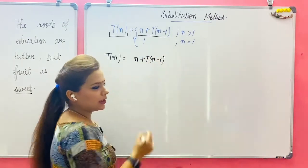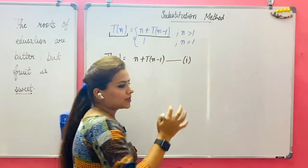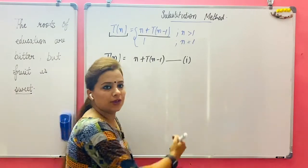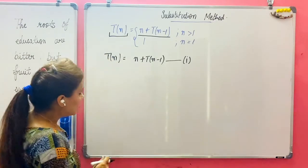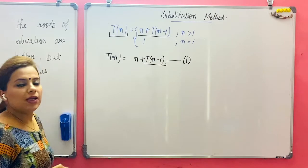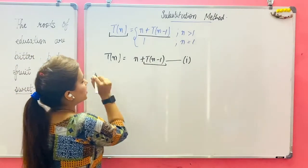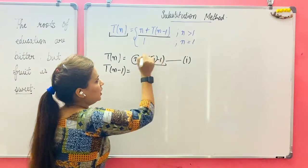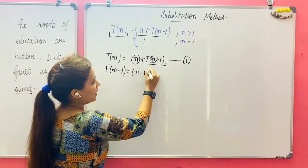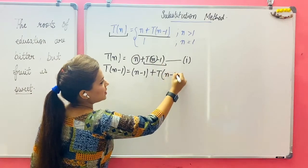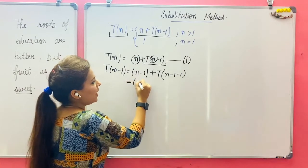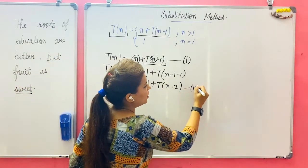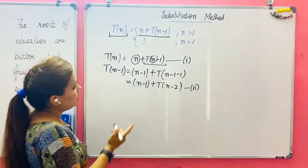So let's start. The first expression is T(n) = n + T(n-1). In back substitution, the number of steps we perform are always fixed, so you have to follow that process. I know there is T(n-1) in my main expression, so I will calculate its value. Replace n with n-1 in place of n, so it gives you n-1 plus T(n-1-1), which becomes n-1 plus T(n-2). This is equation number 2.